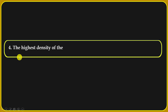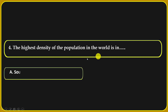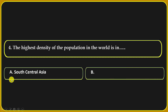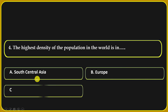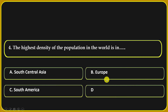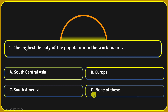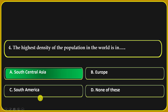The highest density of population in the world is in: South Central Asia, Europe, South America, or none of these. South Central Asia is the correct answer.